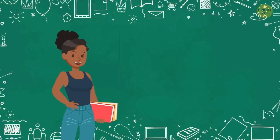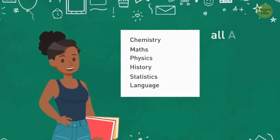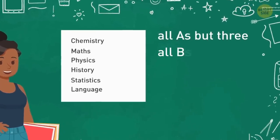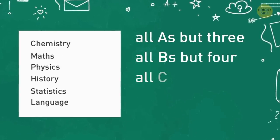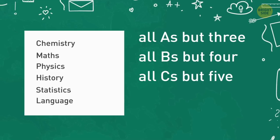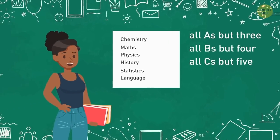Ellery came back home with her term grades. She got all A's but 3, all B's but 4, and all C's but 5. So, how many A's, B's, and C's did she get?